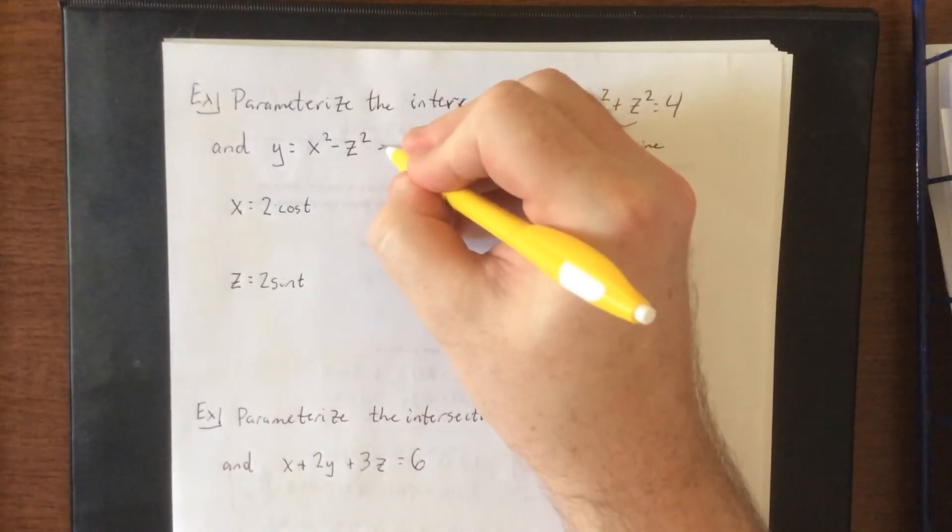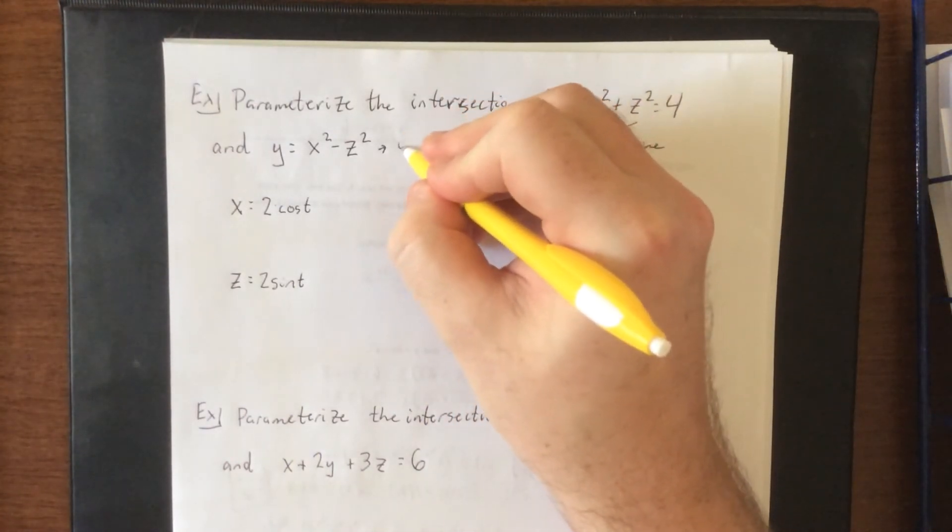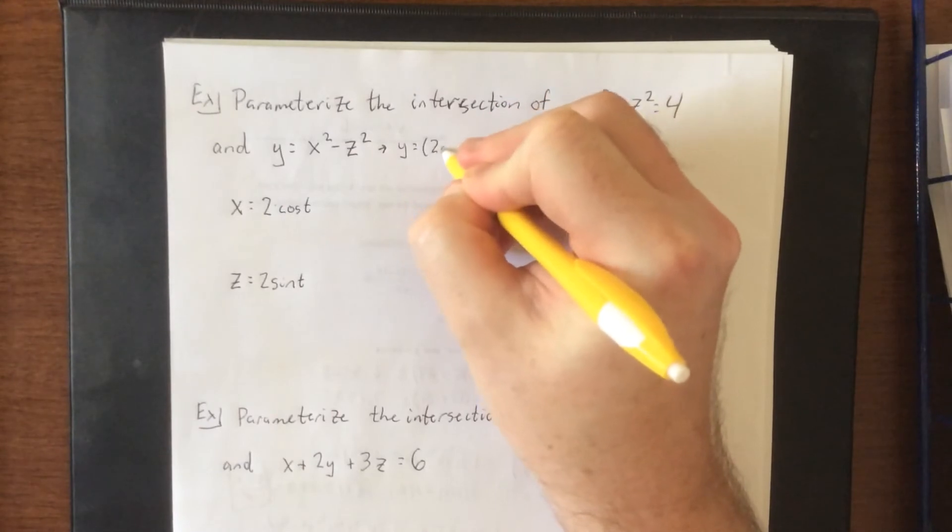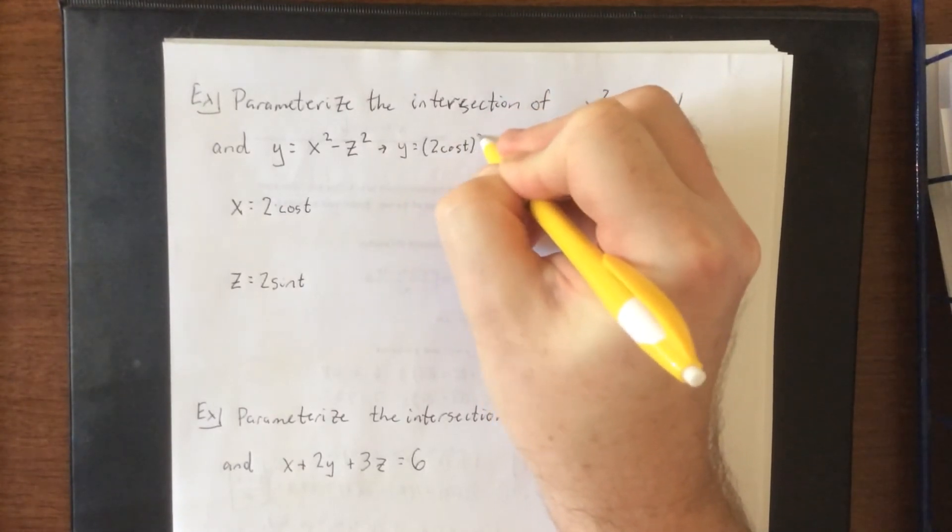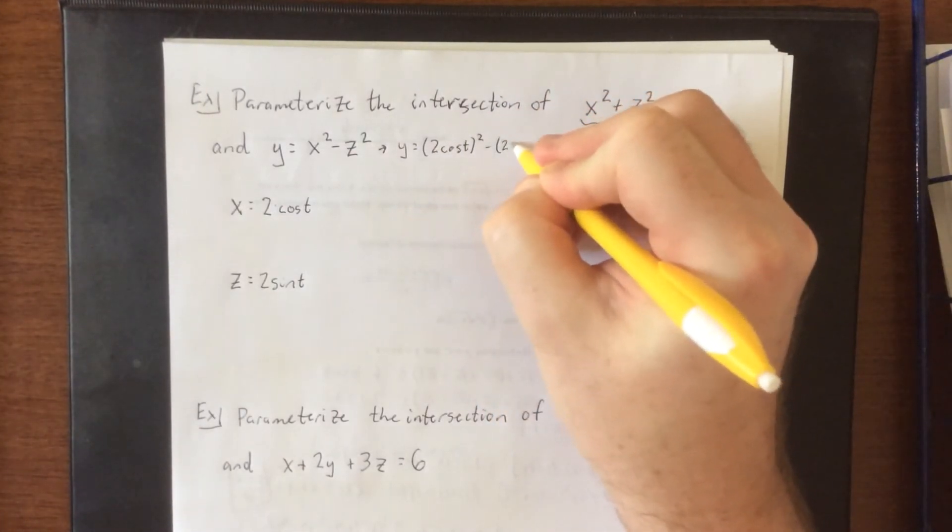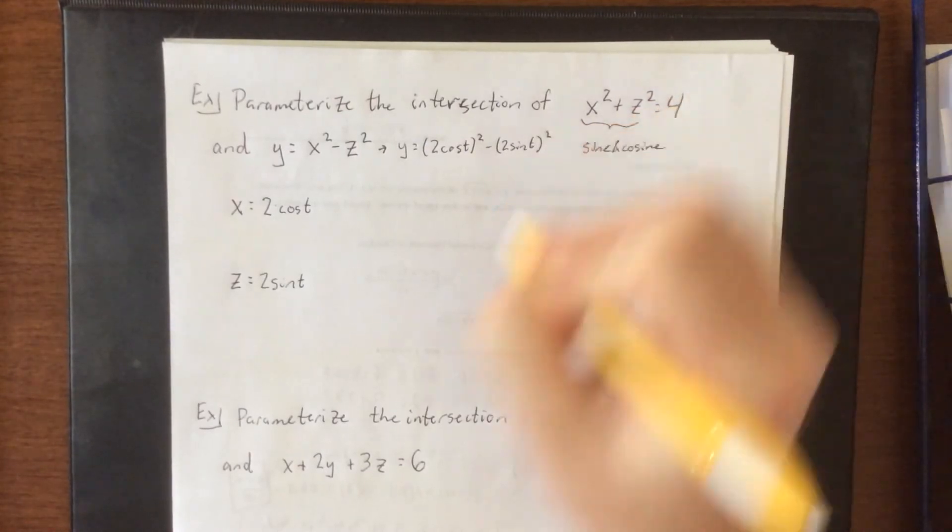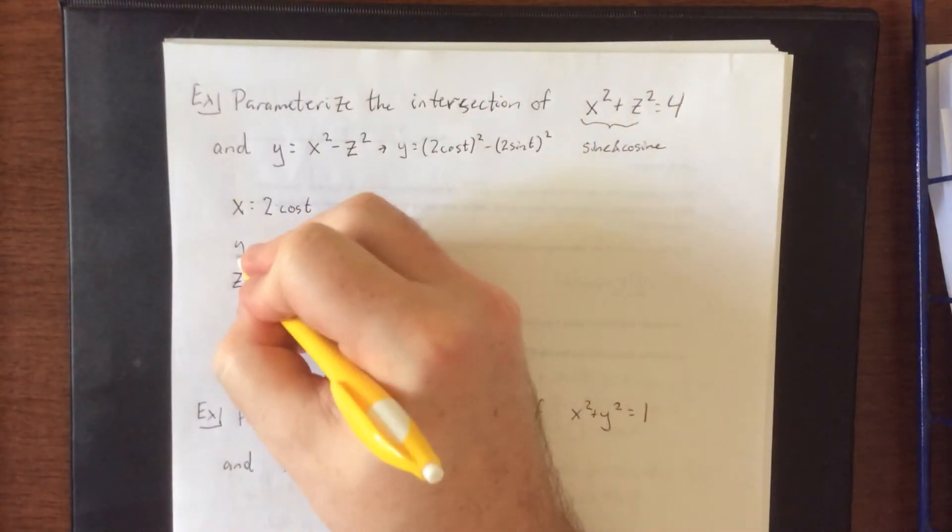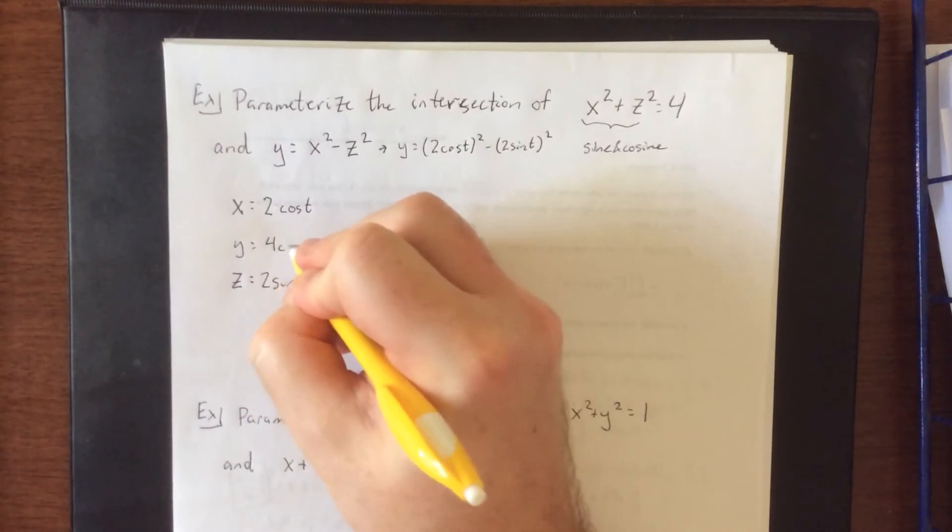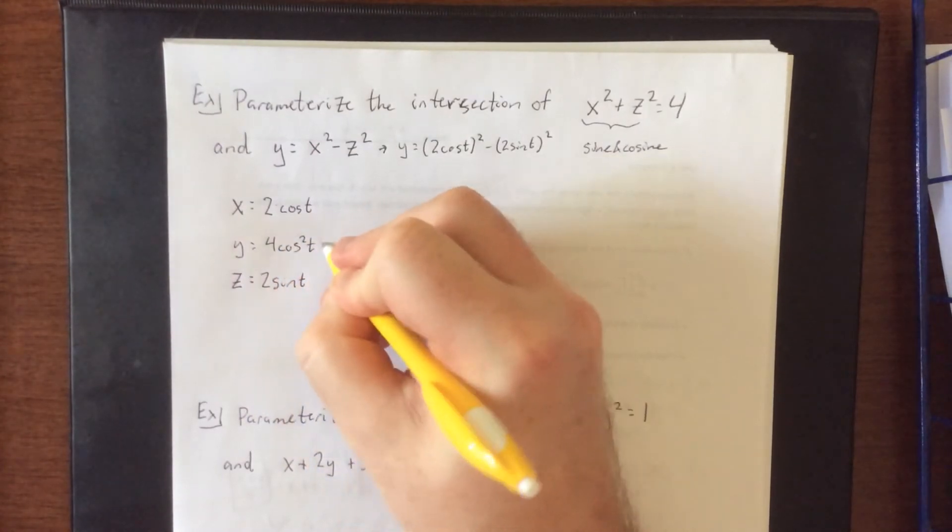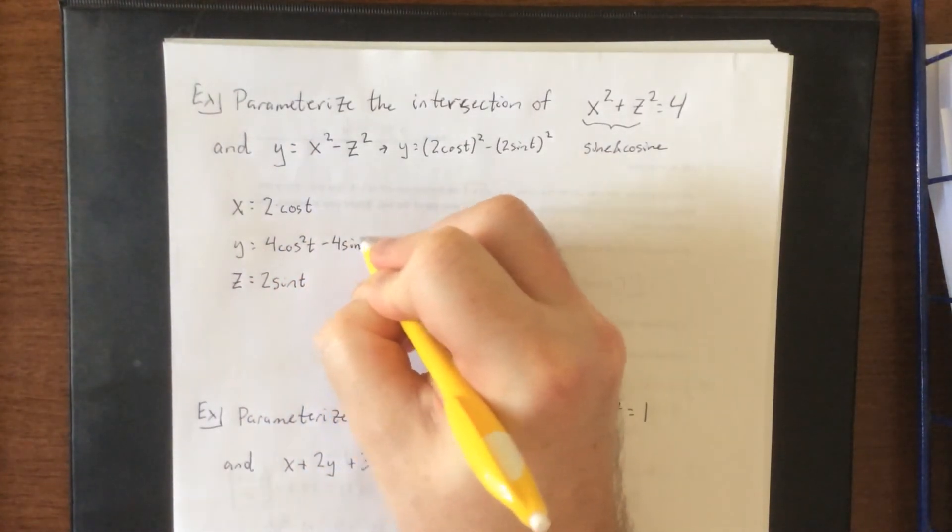I'm going to take both of these and plug them into this identity. That's going to be y is equal to two times the cosine of t quantity squared minus two times the sine of t quantity squared. Simplifying each of these, we'll get y is equal to four cosine squared t minus four sine squared t.